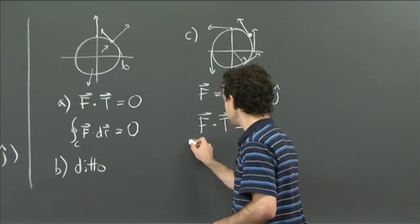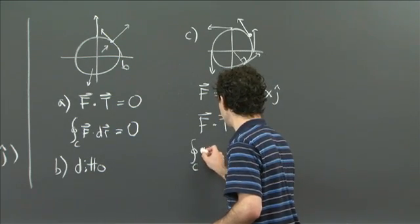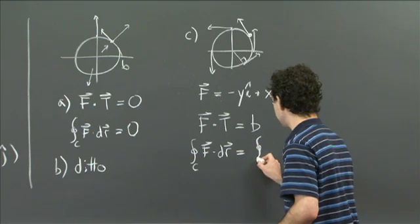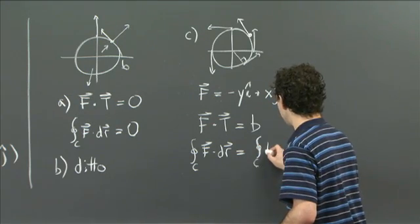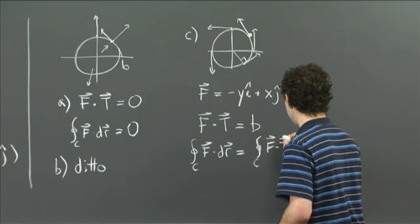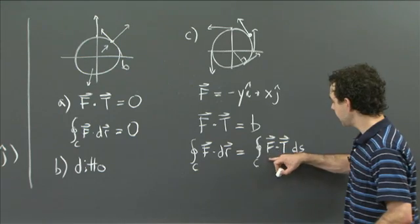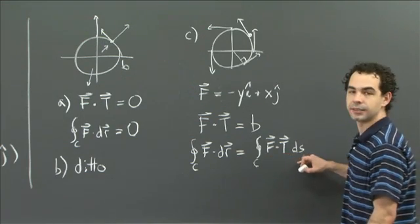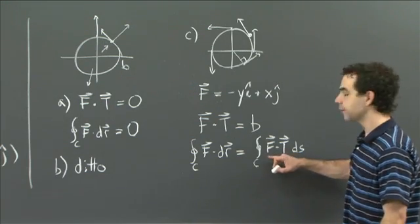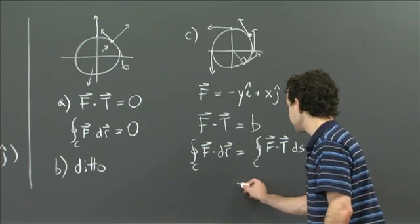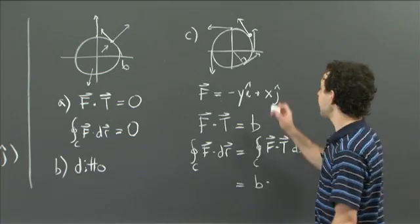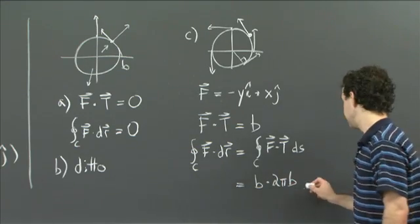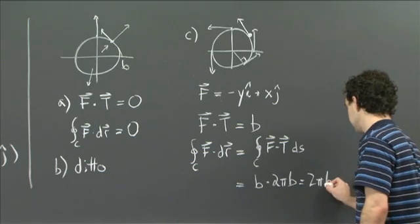Yeah? f dot t is equal to b. So when you integrate around the circle, f dot dr, well, this is equal to the integral around the circle of f dot the tangent vector with respect to arc length. But this integrand f dot the tangent vector is this constant b. So you're integrating over the curve b ds. All right? And when you integrate a constant ds, well, that just gives you the total arc length. So this is b times the total arc length. And this is a circle of radius b. So that's b times 2πb, which we could also write as 2πb squared.